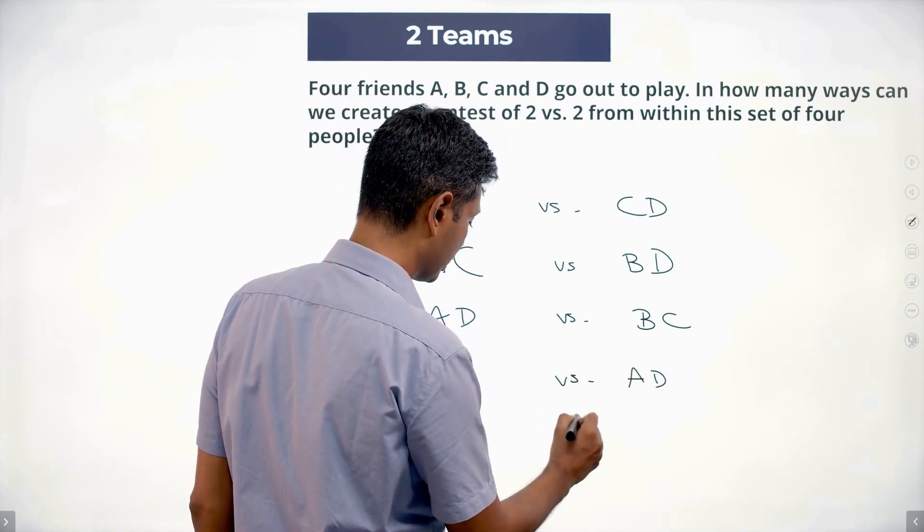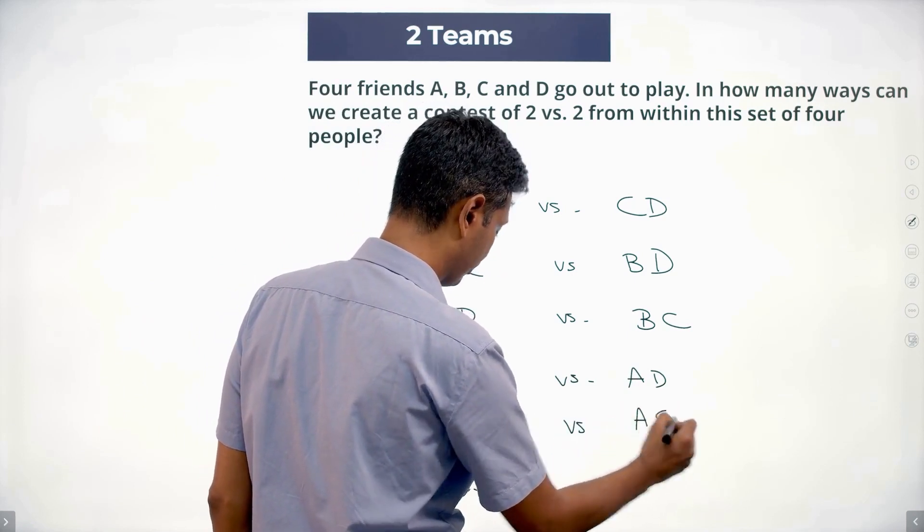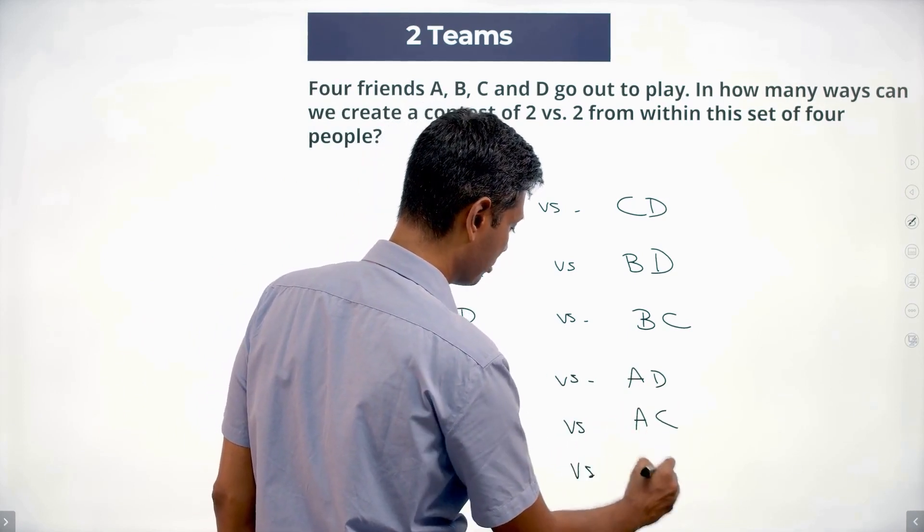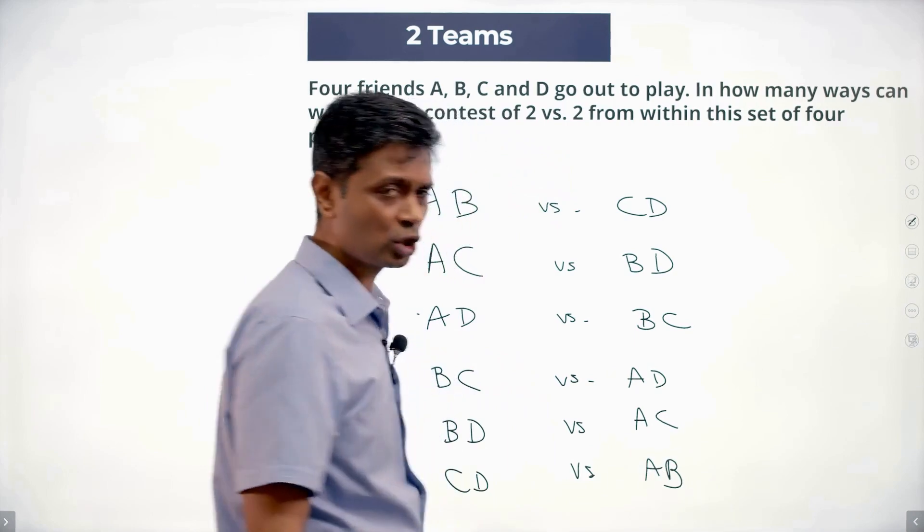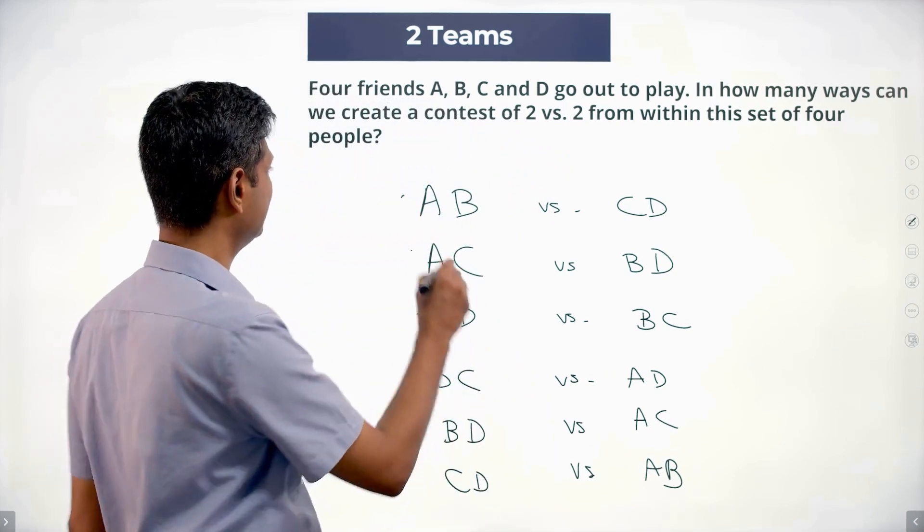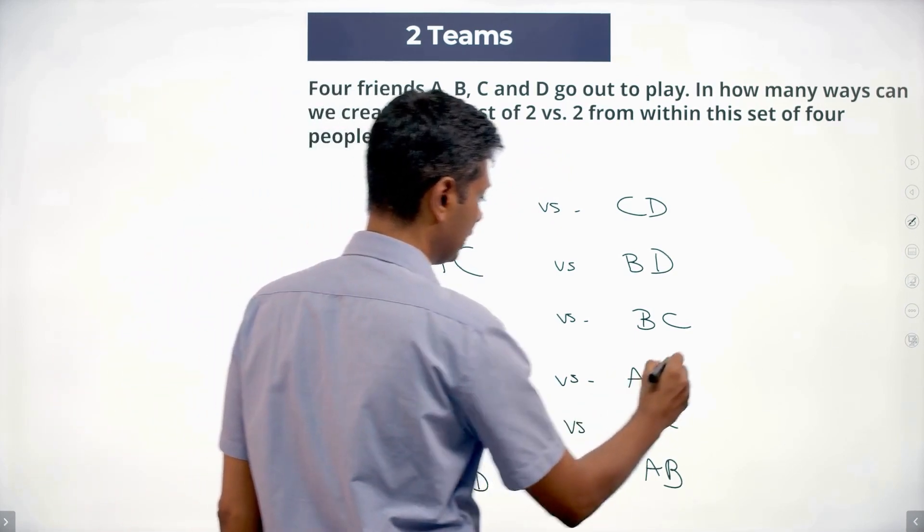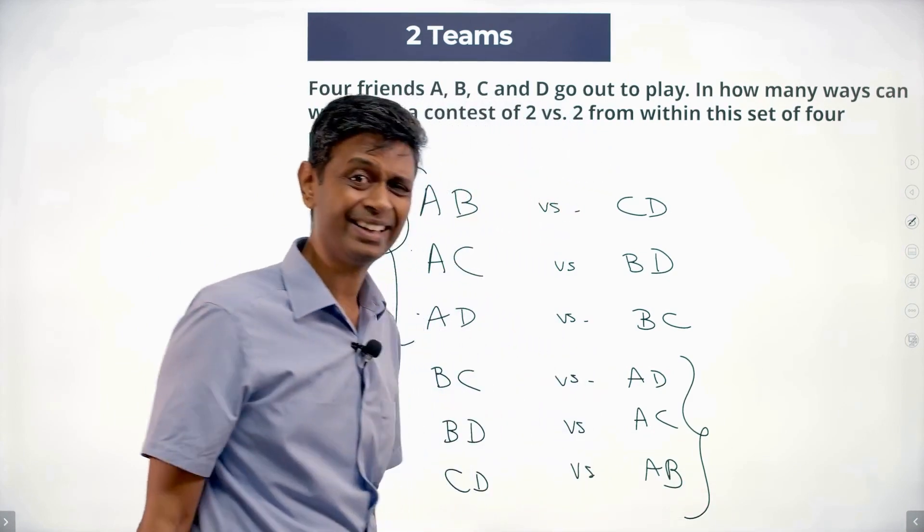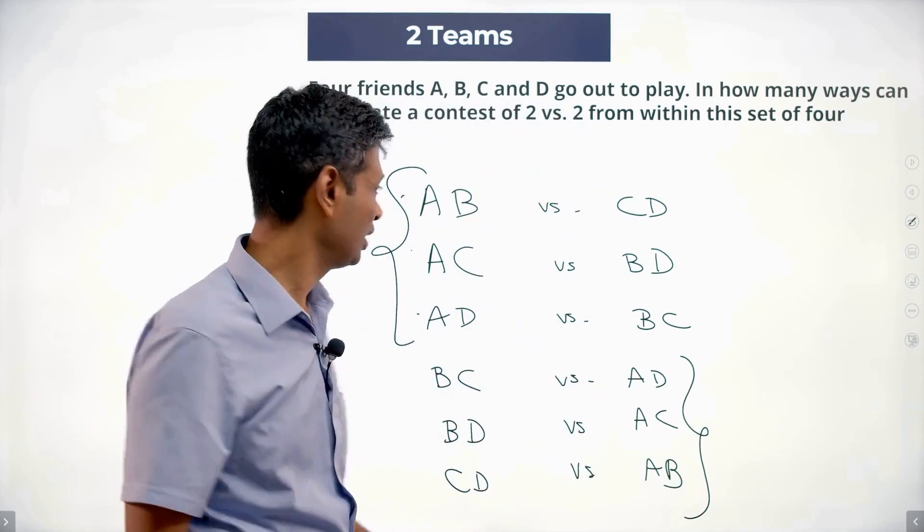B, D gets selected, B, D versus A, C. C, D versus A, B. The only catch here is these three matchups and these three matchups are identical. So we don't have six matchups, we have only three.